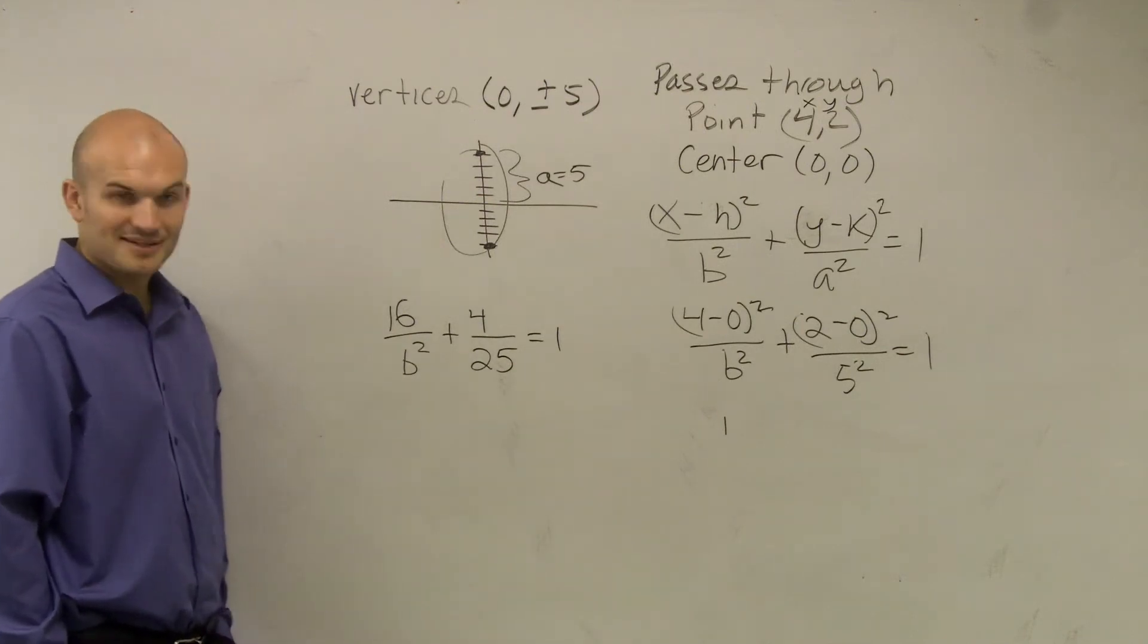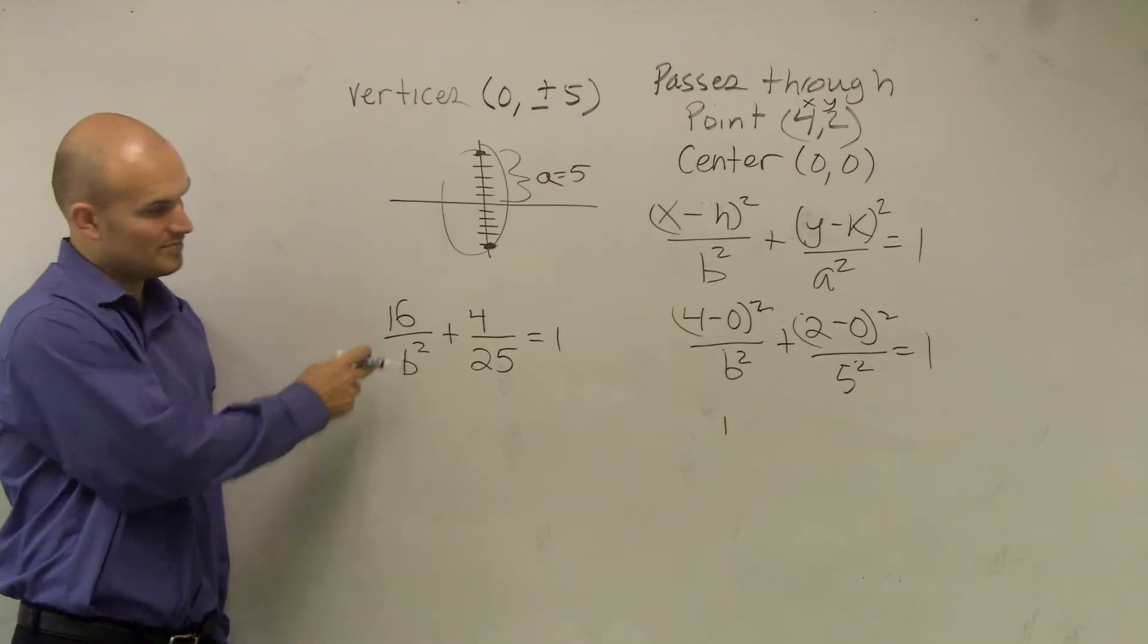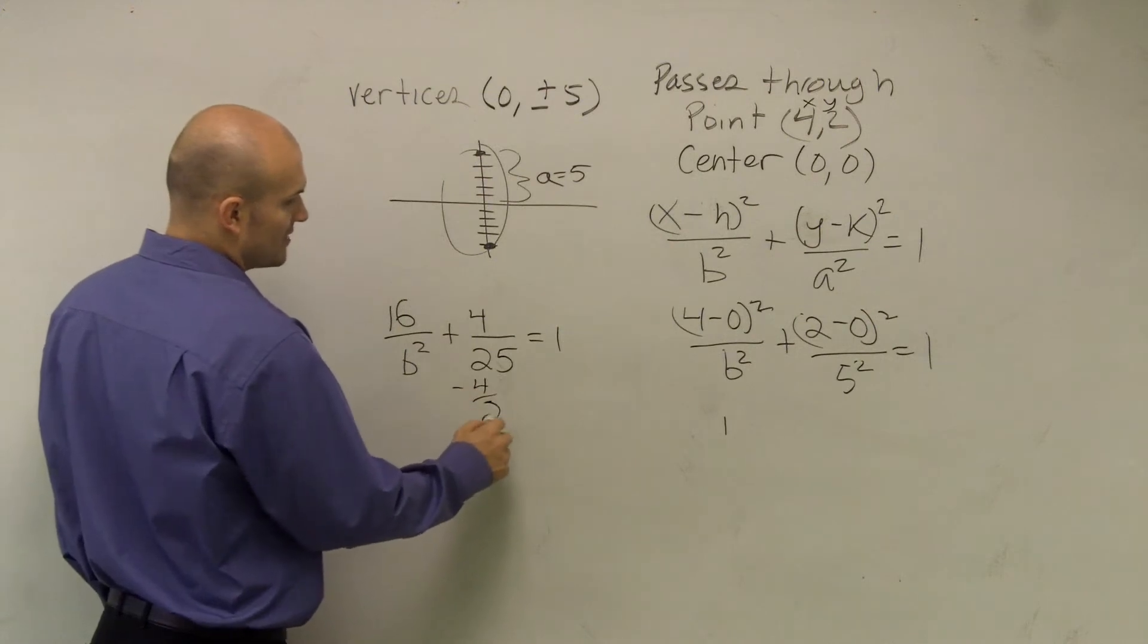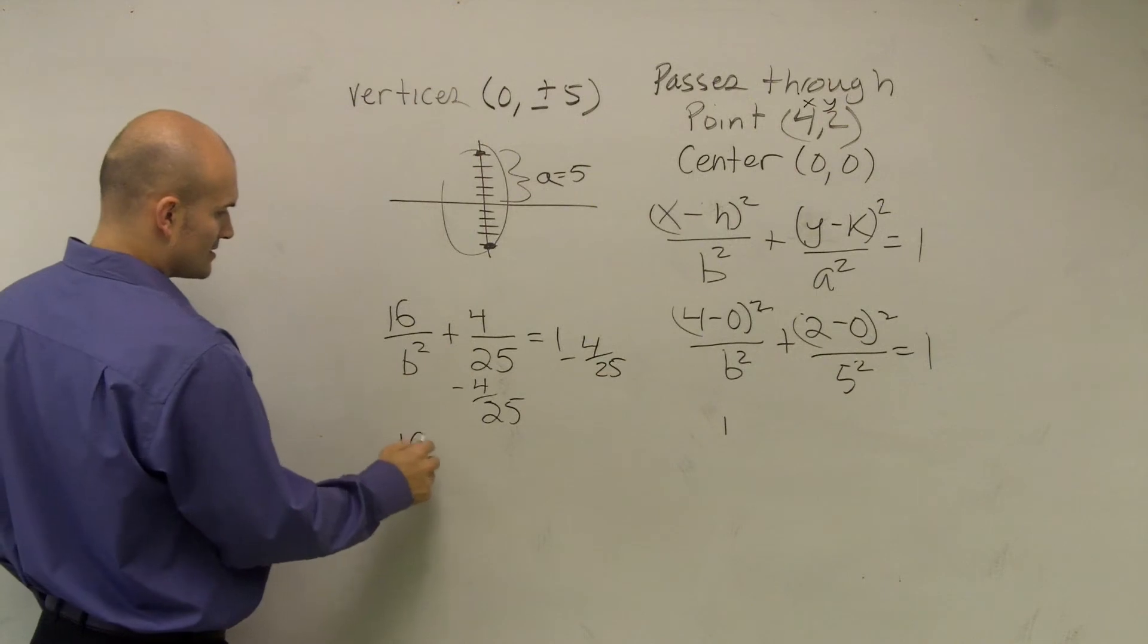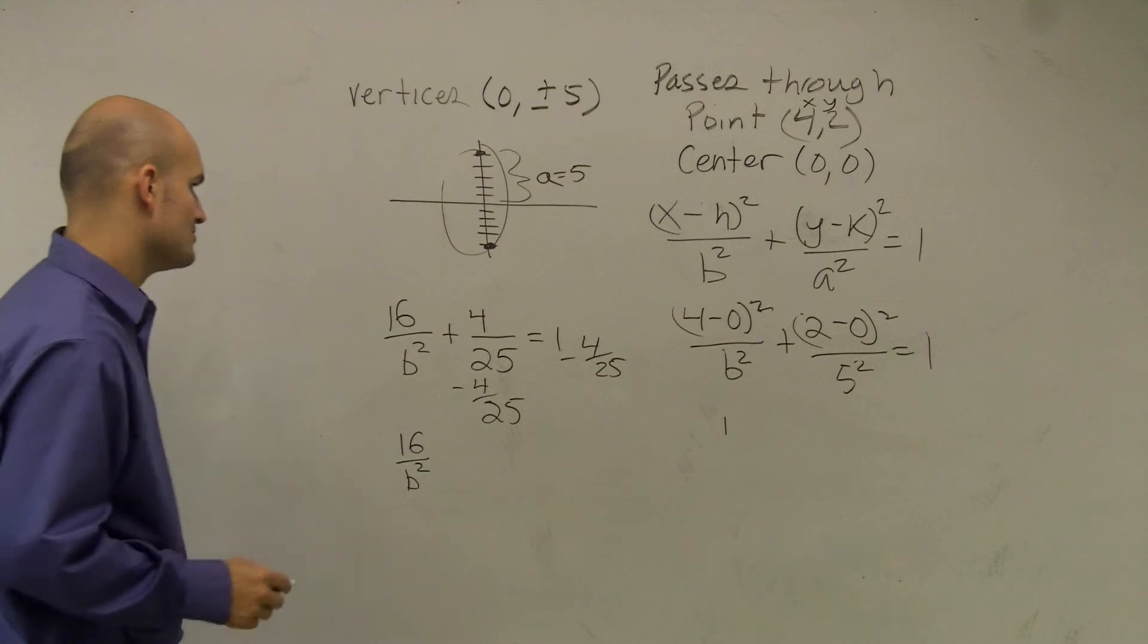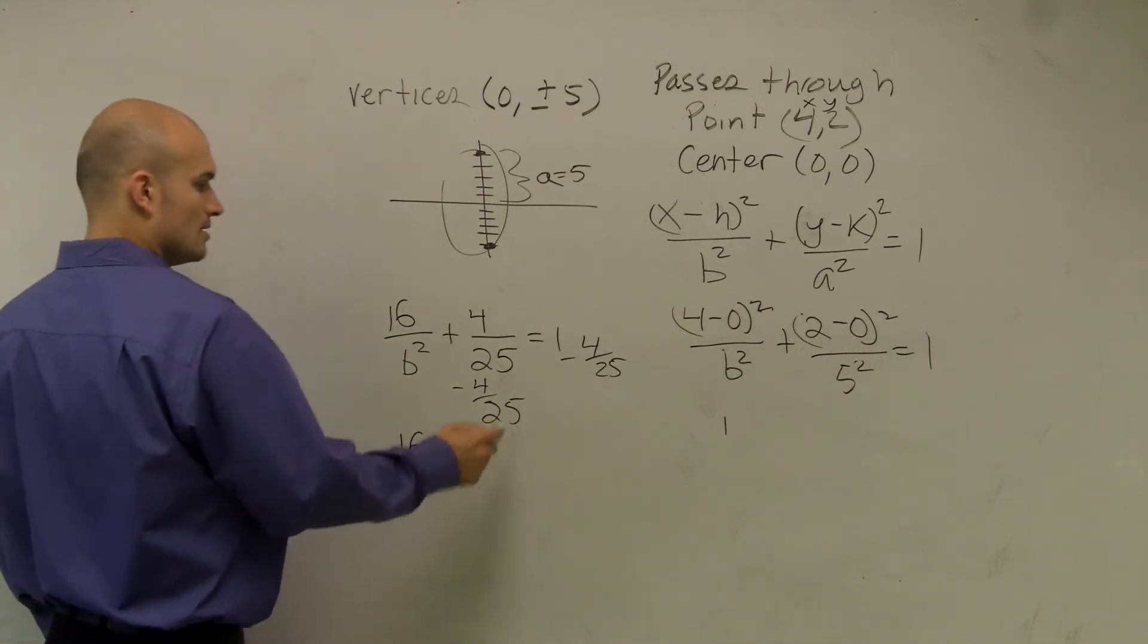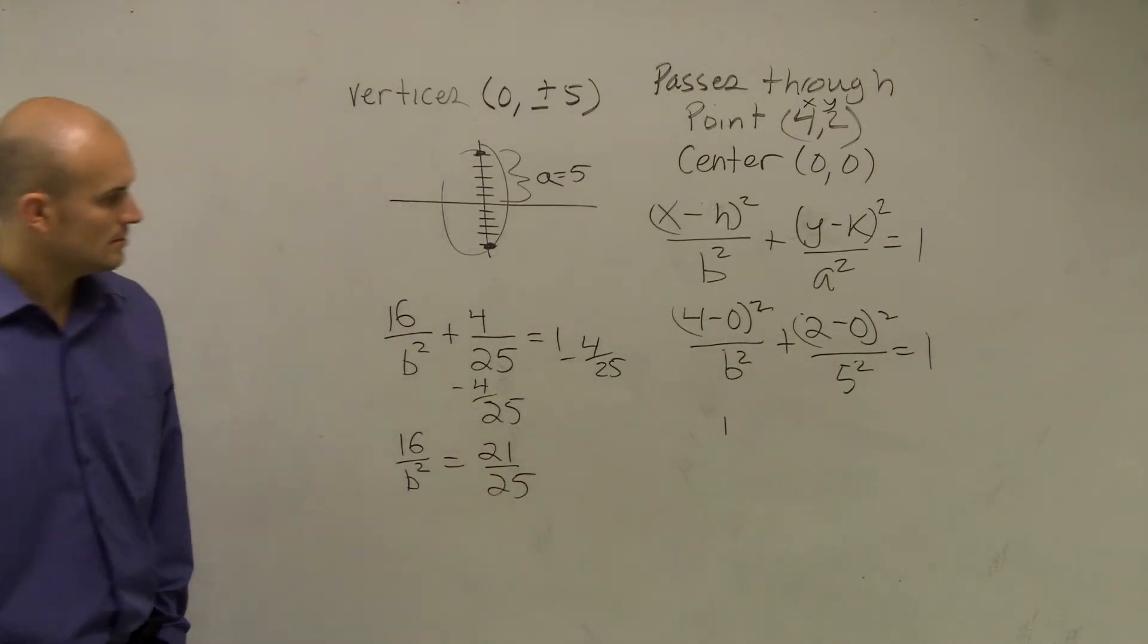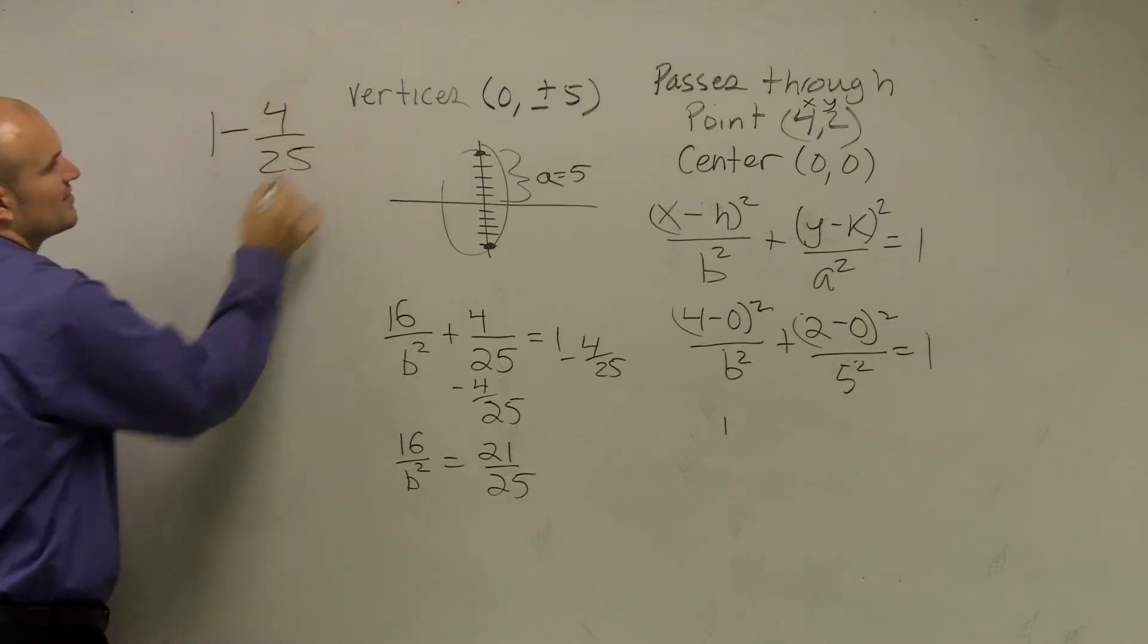To make this problem fun, now I'm going to solve for B². To do that, let's subtract 4/25ths, and I get 16/B² equals 21/25.